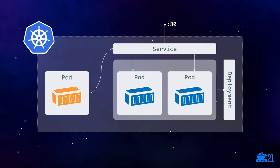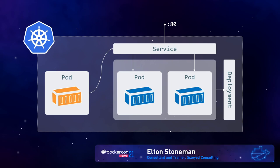In this session we'll dive into the three main types of objects you'll work with in the Kubernetes API: pods, services, and deployments. If you're completely new to Kubernetes, this diagram may look complicated now, but by the end of the session you'll understand how all those pieces fit together.